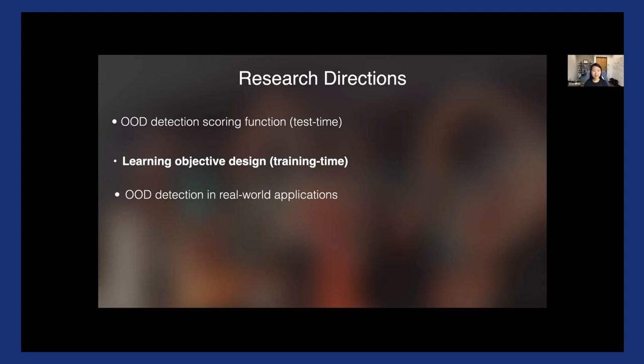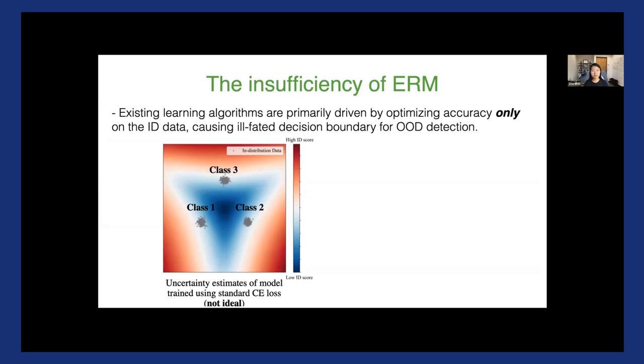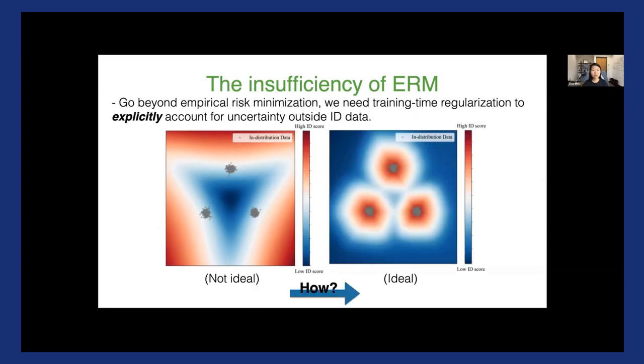For the time being, let's continue. So going beyond the test time OOD scoring function, I also want to briefly talk about the learning objective design from a training time perspective. In my view, I don't think we can fundamentally address this problem without rethinking how machine learning models are trained. And to explain what I mean, let's revisit this example. This is a model trained using ERM on the in-distribution data only. So the decision boundary, as we saw earlier, is good for classification but insufficient for OOD detection purposes. And so we need some training time regularization to explicitly account for the uncertainty outside the in-distribution data. And so the ideal decision boundary should be something more like the right-hand side that's much more conservative, right, surrounding our in-distribution data. And so the question really is how do we go from the left to the right side?